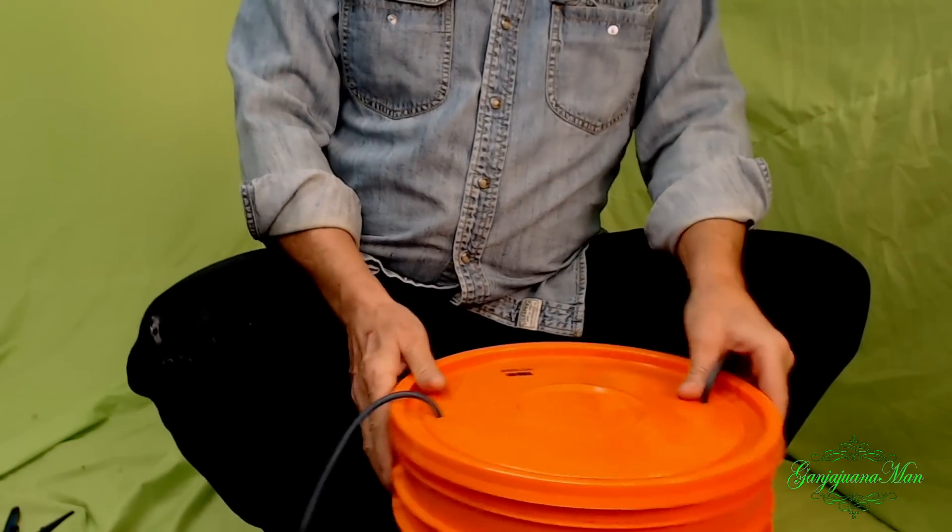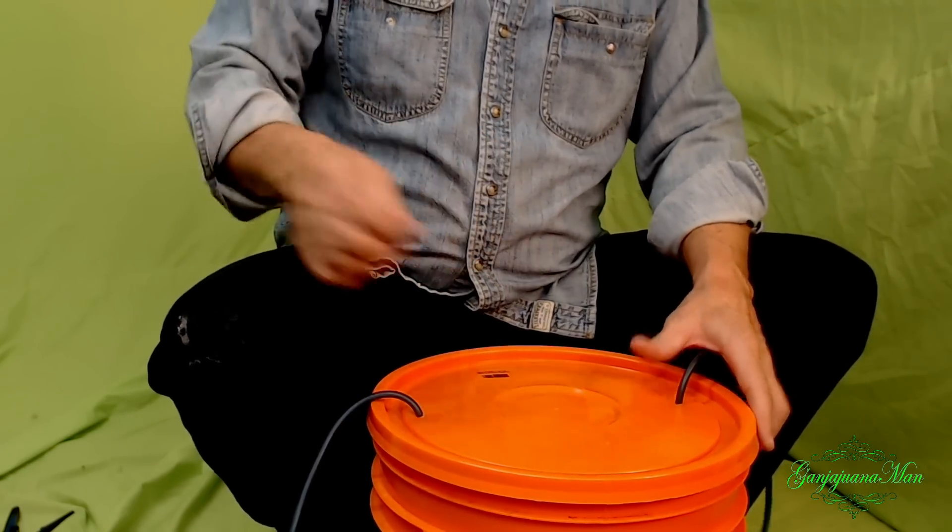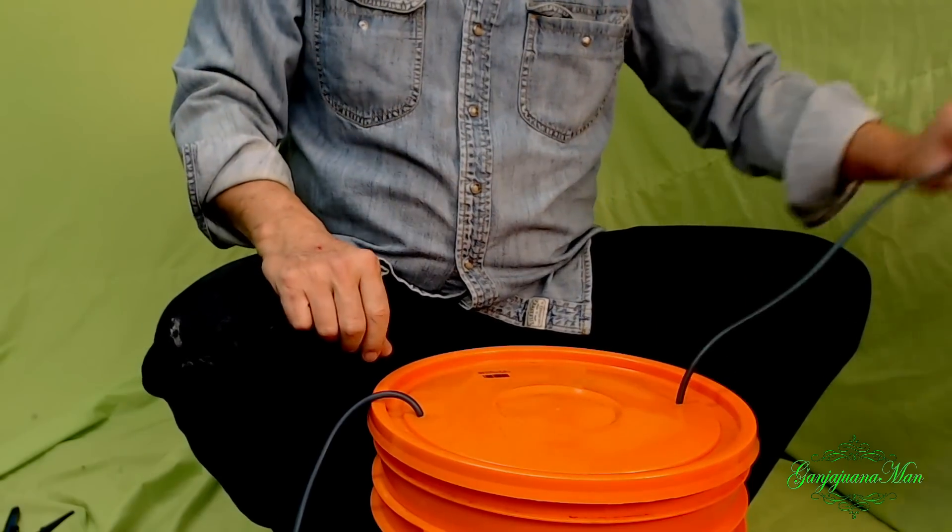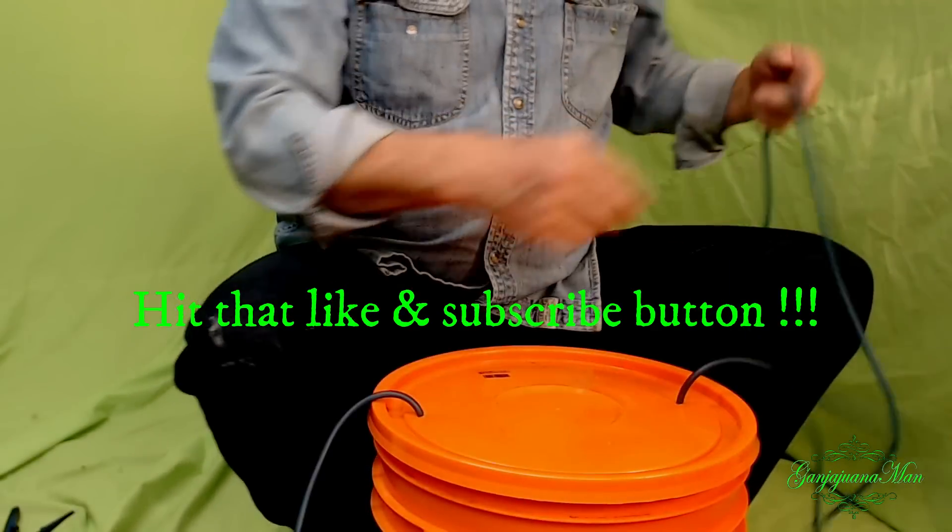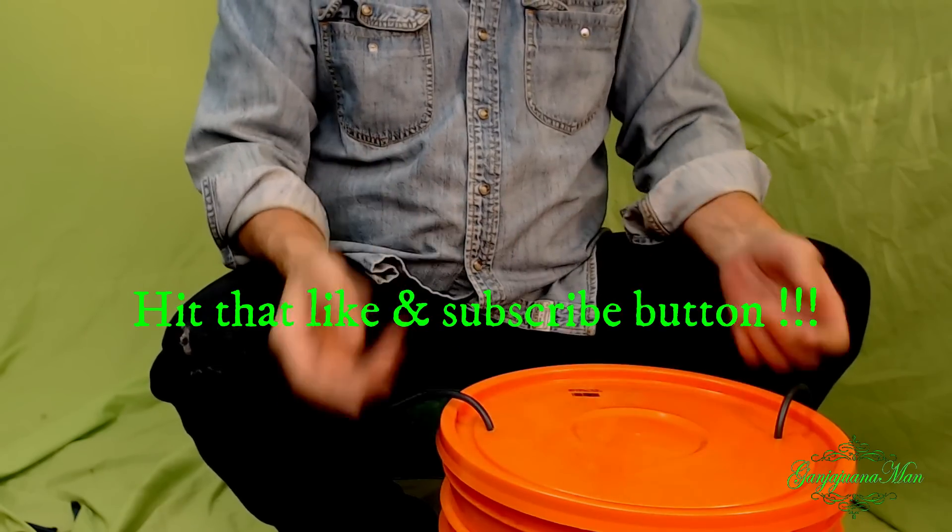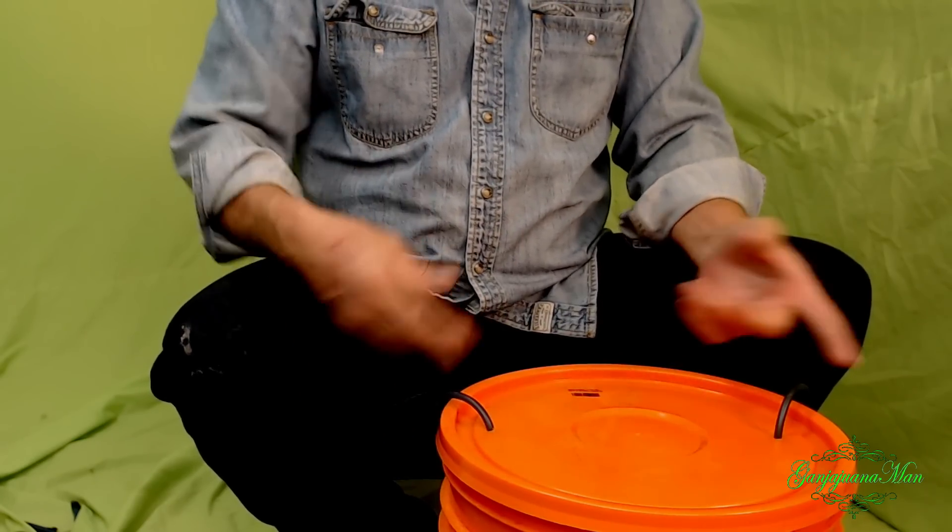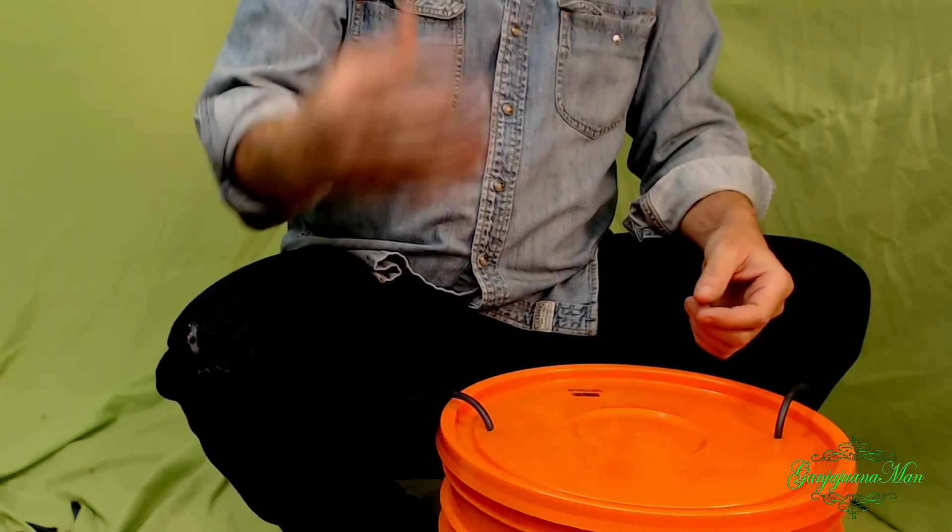Once you put the yeast in there, you just give it a light stir. You don't have to go nuts on it like you did with the sugar, you're not trying to dissolve it. Like that yeast and sugar, when it mixes and does its reaction, it foams up really good.